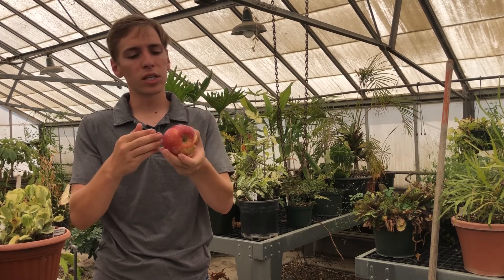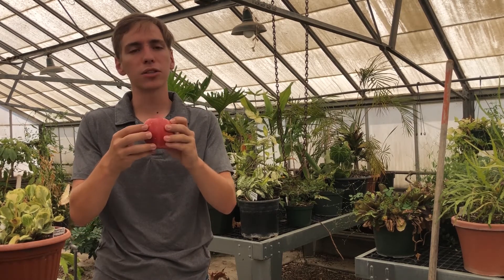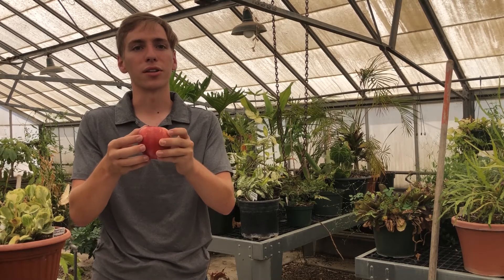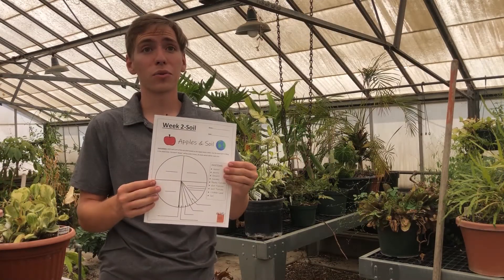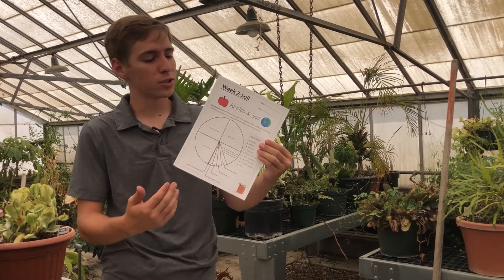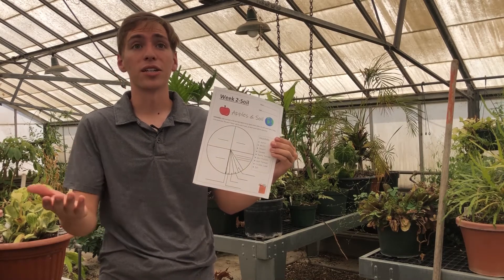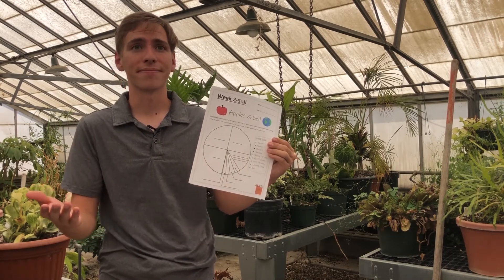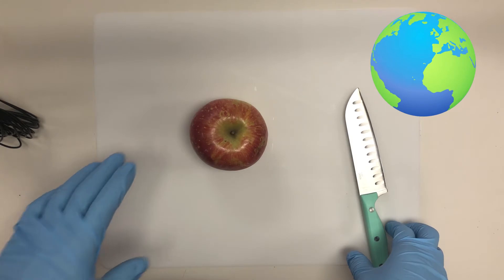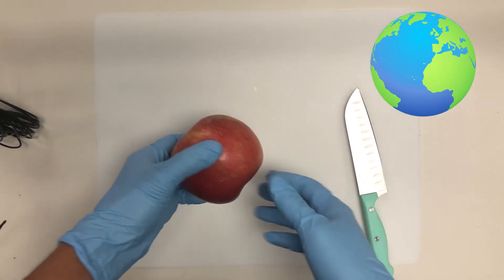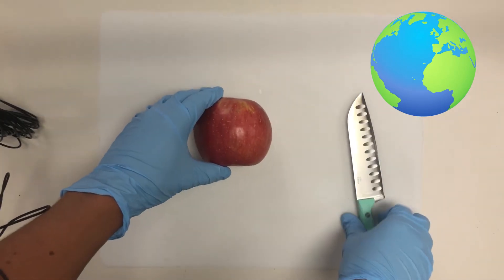We're going to decide how much of this apple is actually usable soil on our earth. Make sure to follow along with our worksheet, labeling each part of the earth as we divide it up in our demonstration. First I'm going to cut my earth — or my apple — into four equal pieces.